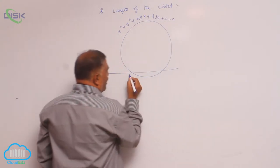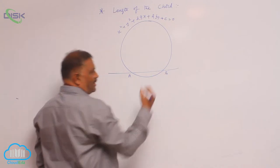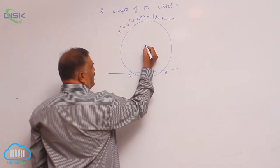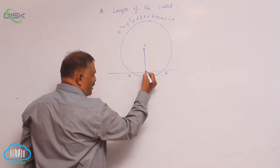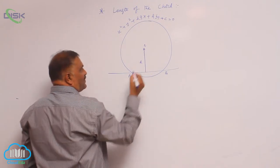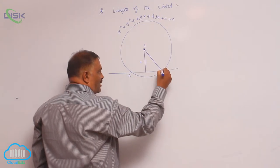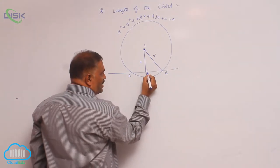Any chord AB you take from center, if you can draw the perpendicular, this is d and this is r. Now you know that this is 90 degrees.